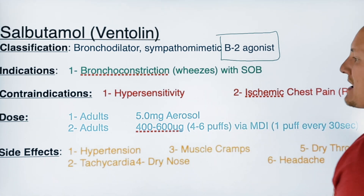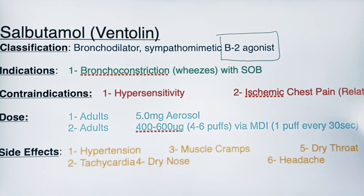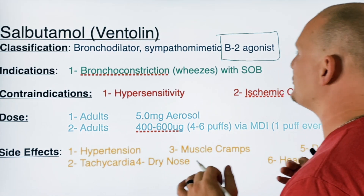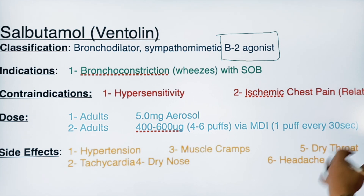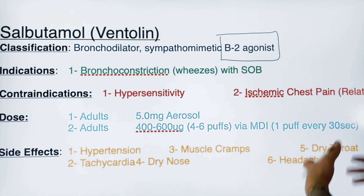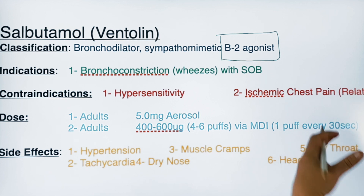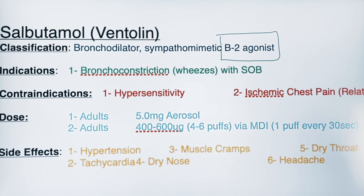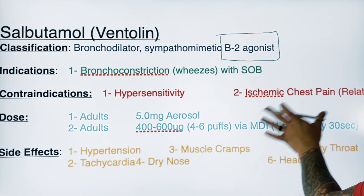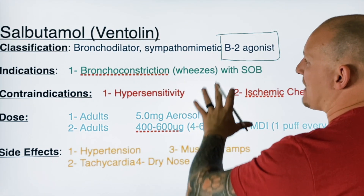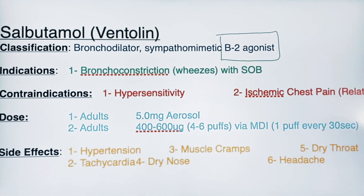For contraindications, there aren't many — the main one is hypersensitivity. A relative contraindication is ischemic chest pain. The concern is cardiac wheezes, which are more due to cardiac pathology. If you give salbutamol to someone with pulmonary edema rather than bronchoconstriction, you can actually push more fluid into the alveoli. So use salbutamol in patients with respiratory pathology, not cardiac pathology.